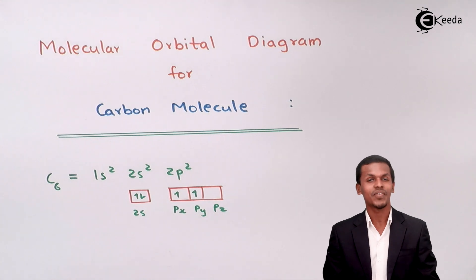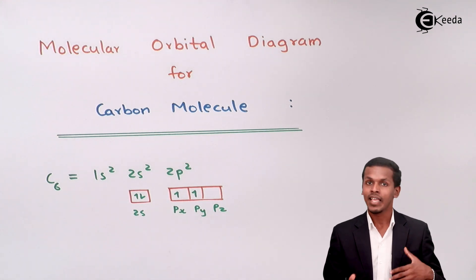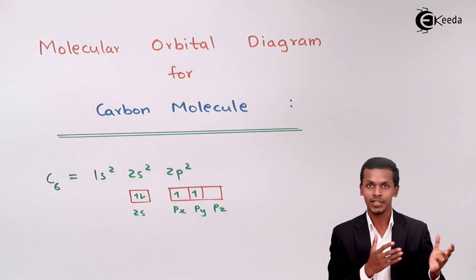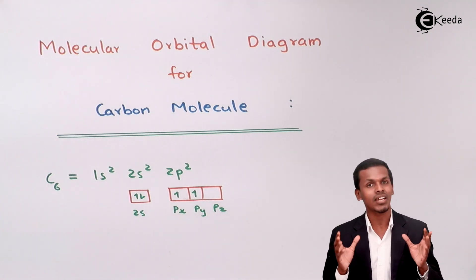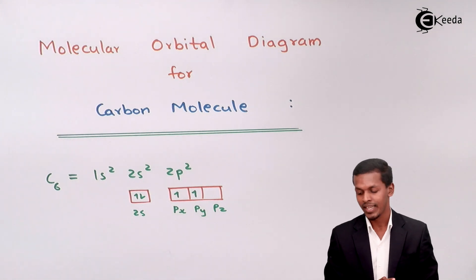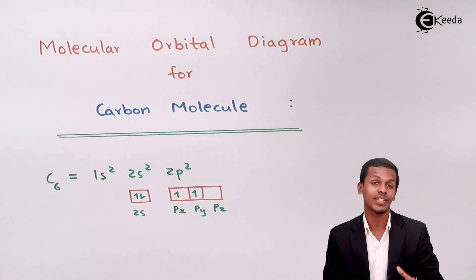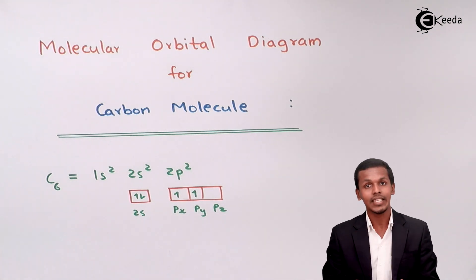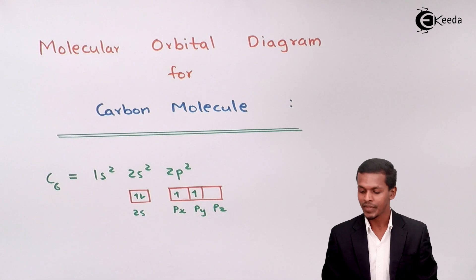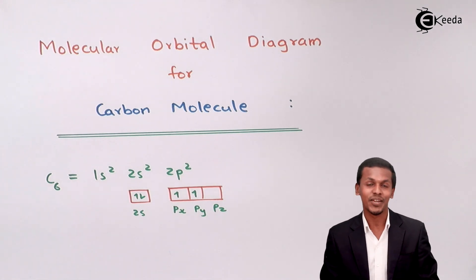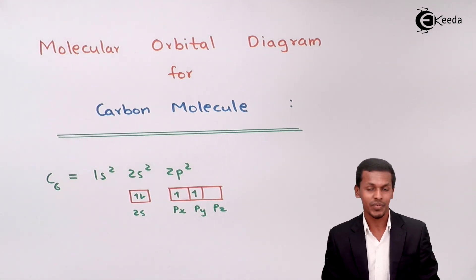Two carbon atoms having the same electronic configuration will combine with each other. We are not exciting the electrons — we are keeping the atomic orbitals as they are, combining them in the ground state only. There are two unpaired electrons present. In hybridization we excited the electrons so that carbon can form 4 bonds, but here we keep it as is — that is something different compared to valence bond theory or hybridization.